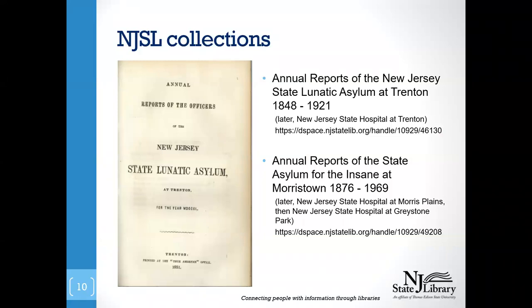Today we're going to look at two collections in particular that are here at the State Library. Our two most complete collections are the annual reports of what was then called the New Jersey State Lunatic Asylum at Trenton — which would later become the New Jersey State Hospital at Trenton — and also the annual reports of the State Asylum for the Insane at Morristown, which would change names several times, eventually becoming the New Jersey State Hospital at Greystone Park. I have provided links directly to those collections, and I will bring these back up again at the end of the talk.